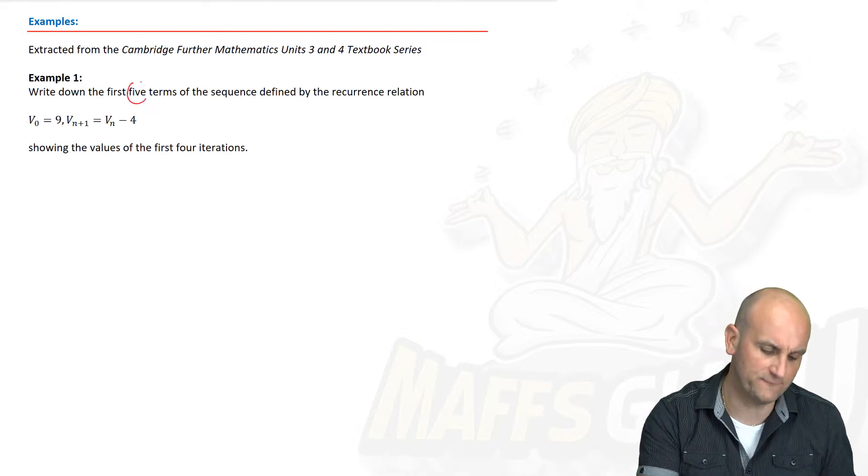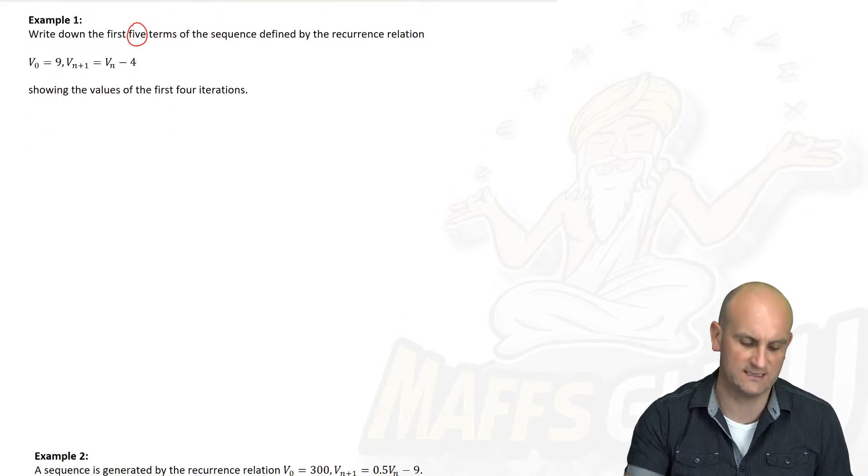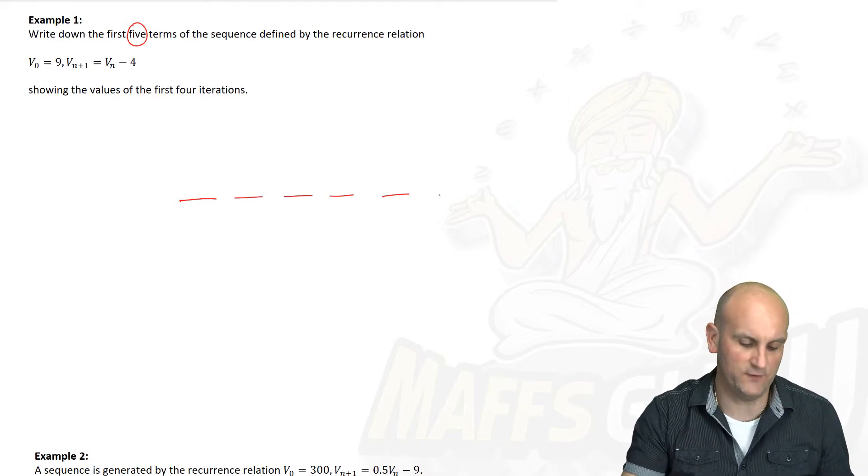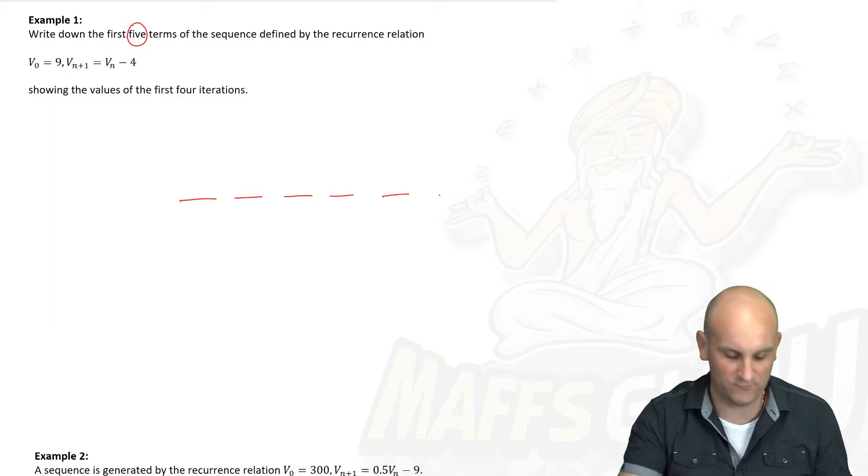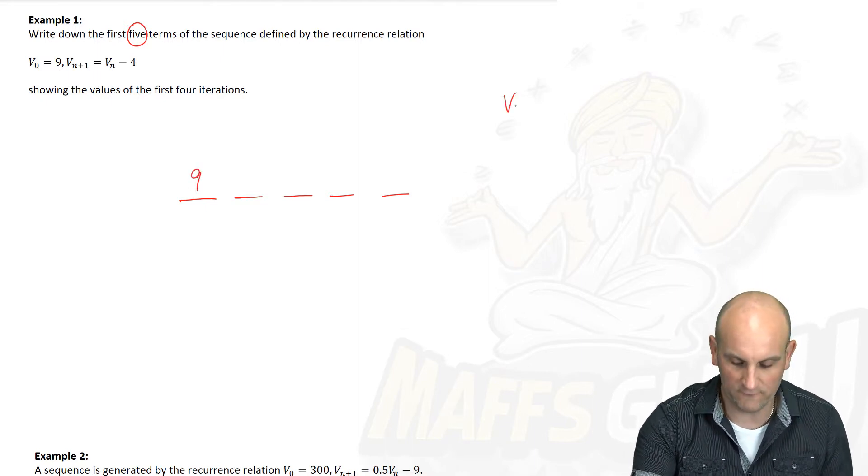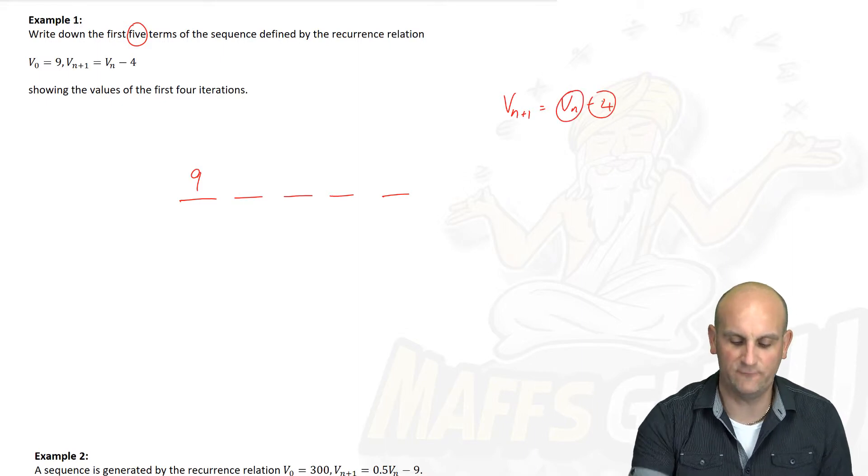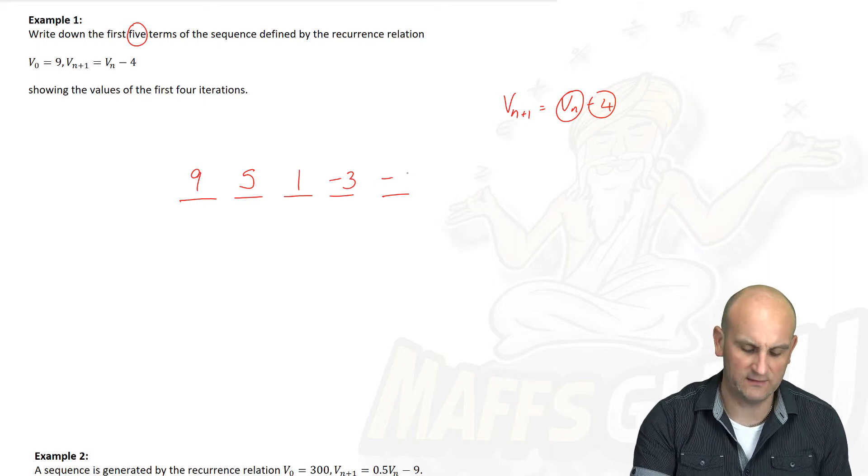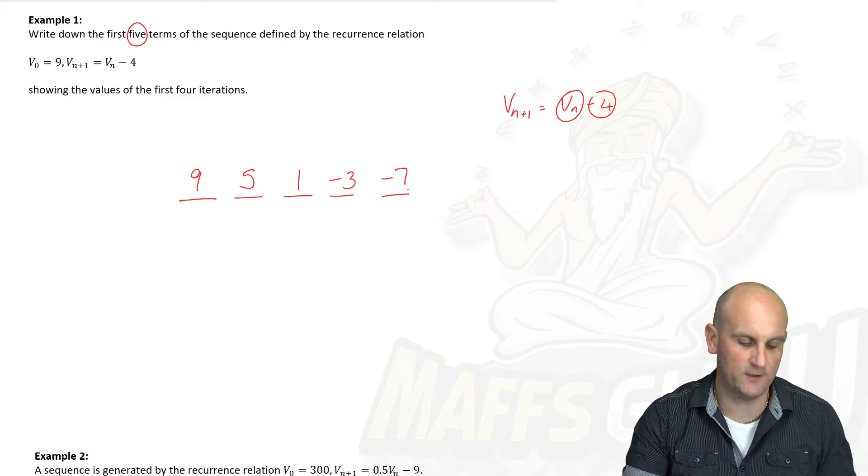Example 1. Write down the first five terms. I can do that. Of the sequence defined by the recurrence relationship. Ah, Barry, you can use that. Very, very long words. But we know that it basically means a sequence. Alright, so write down the first five terms. There's my first five little lines. And now, what does it say? V0 equals 9. I know what that means. Thank you very much for my first term. It is, in fact, 9. And then I've got Vn plus 1 is equal to Vn minus 4. Take my current term, and then take away 4 from it, and I'll get my next one. I can do that. That gives me 5. Take away 4 gives me 1. Oh, negative numbers. Take away 3. Sorry. Take away 4 gives me negative 3. And take away 4 gives me negative 7. And, Barry, I'm afraid you have not beaten me this time. So, there we go. See what that does?